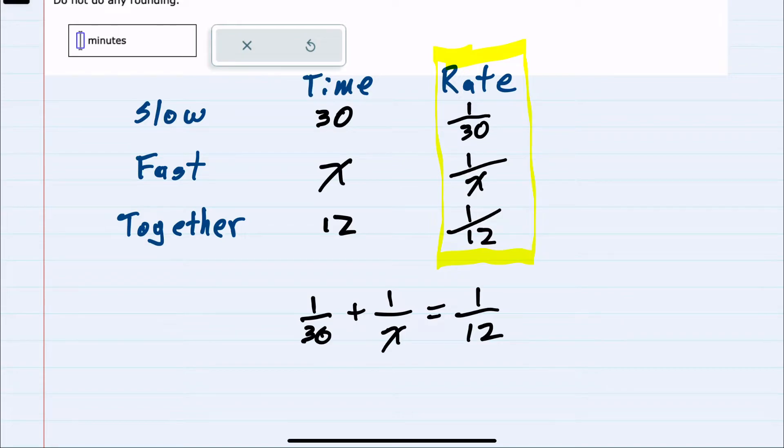So we have an equation with our variable that we can solve for. We'll want to first find the LCD, the lowest common denominator, to get rid of all these fractions.